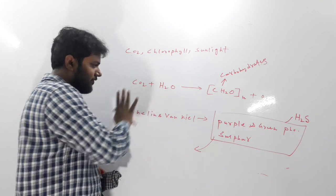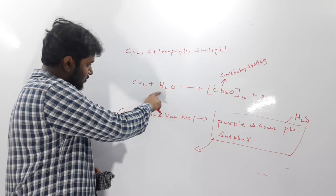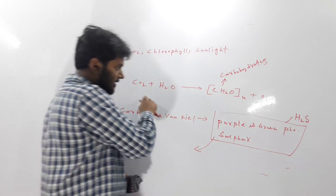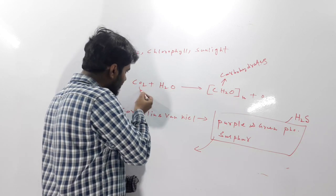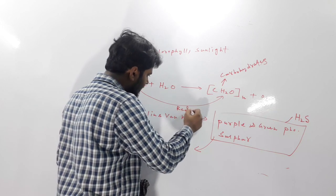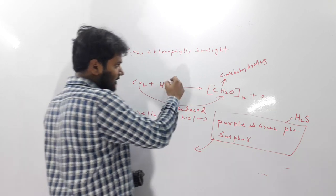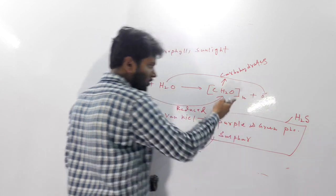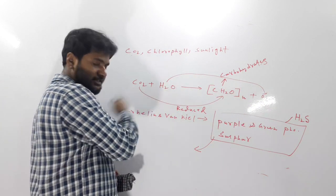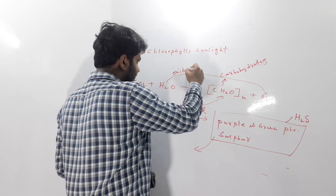The role of H2O is to donate hydrogen to carbon dioxide, thereby reducing it, while the water itself is oxidized to produce oxygen. So the oxygen released in photosynthesis actually comes from water.